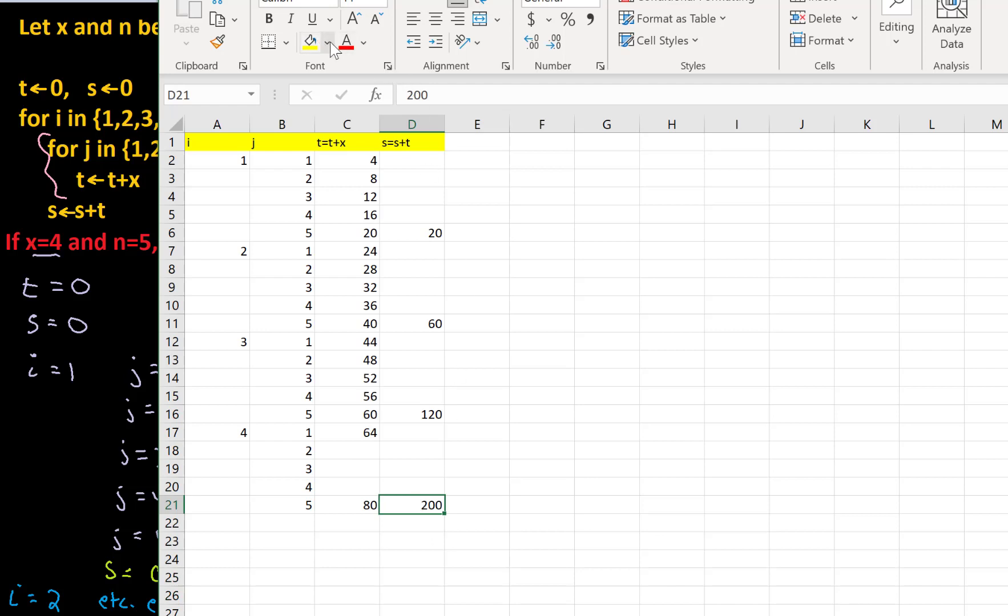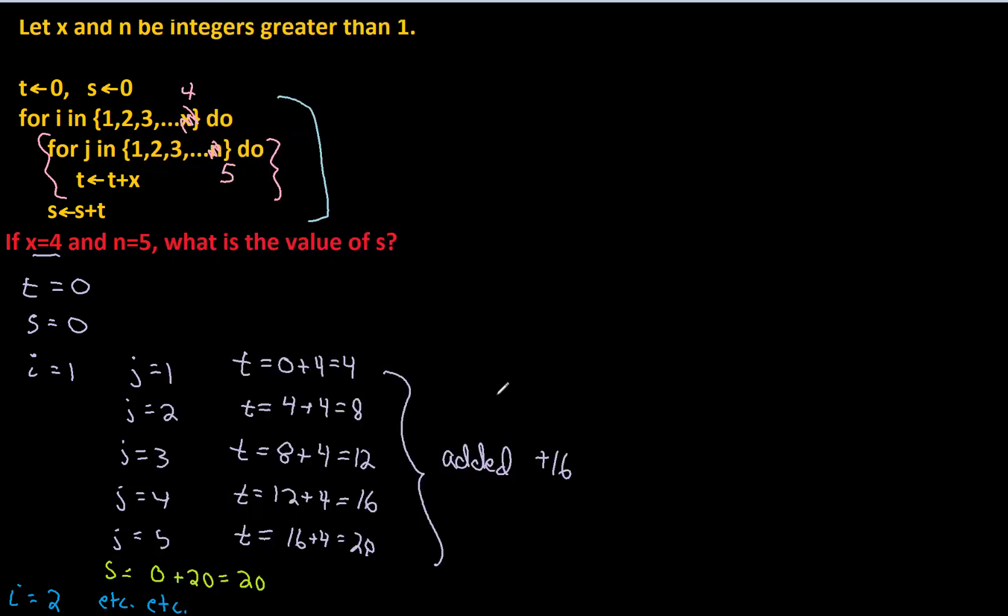Okay, so we've got our final answer here. I'll just put it in another color. Our final answer was 200. Now, the next thing we can ask ourselves is, you know, how many additions are there? So let me make a new spot on my screen here. So how many additions? And this is in terms of n and x.